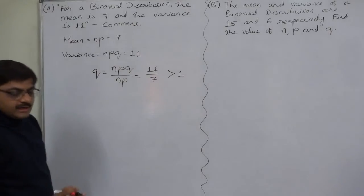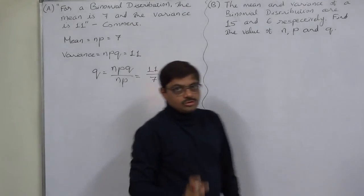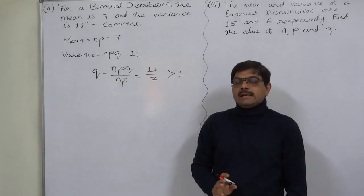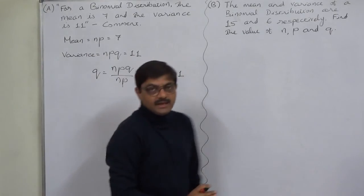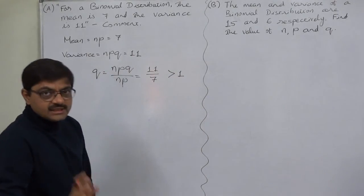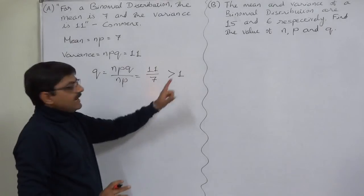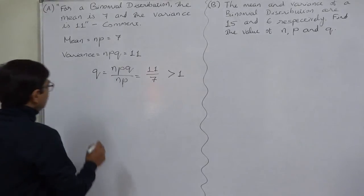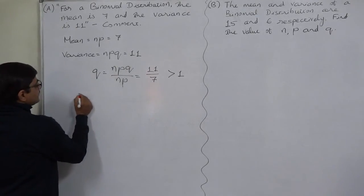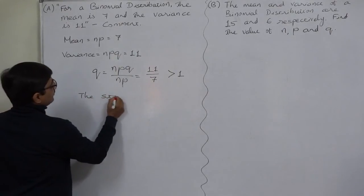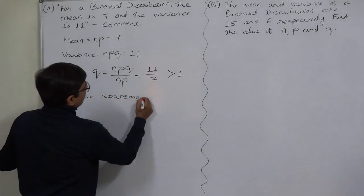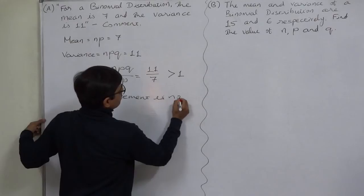And we know that Q is also a probability of non-happening of any event. And since it is a probability, it can never be greater than 1. So the statement is not true.